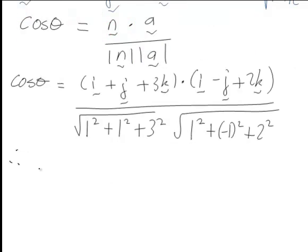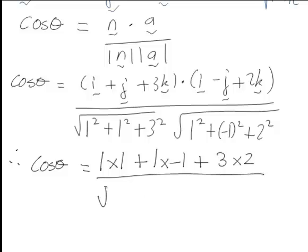Scalar product we just multiply the i, j, k components, the coefficients of those together. So 1i, 1i, so 1 times 1. 1j, negative 1j, so 1 times negative 1. And plus 3 times 2. And these parts here work out to be the square root of 11 times the square root of 6.